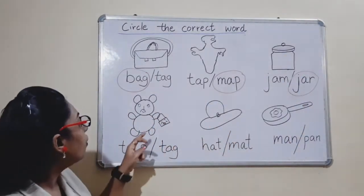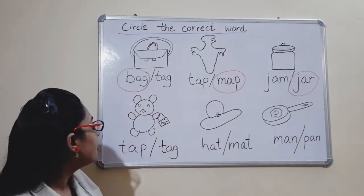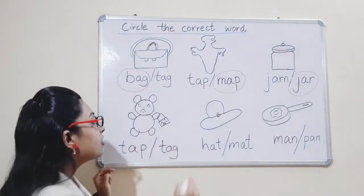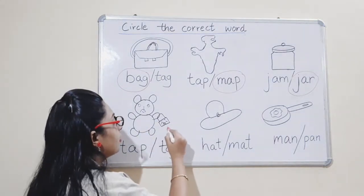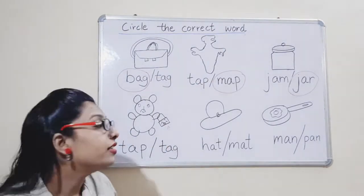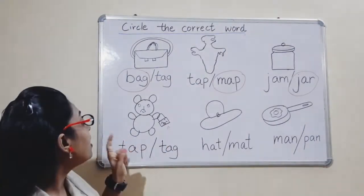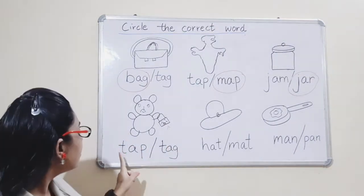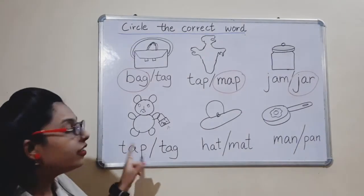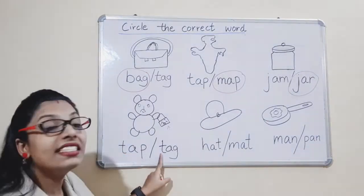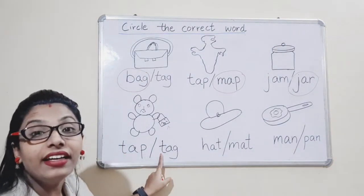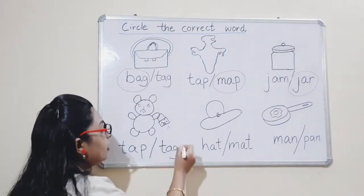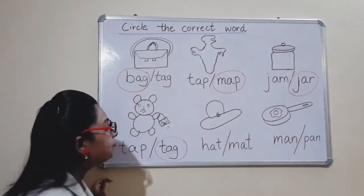Now next. What is this? Tag. T-A-G — tag. Is this T-A-G? No. Is this T-A-G? Yes. So circle it. Okay.